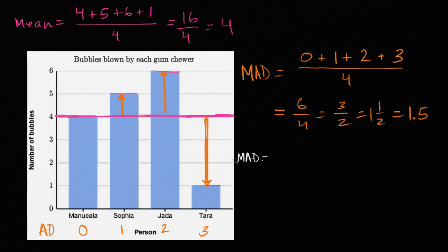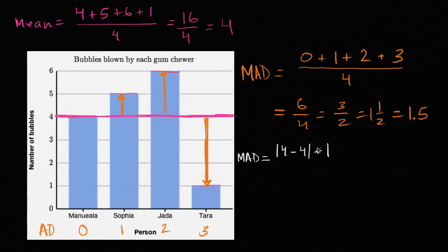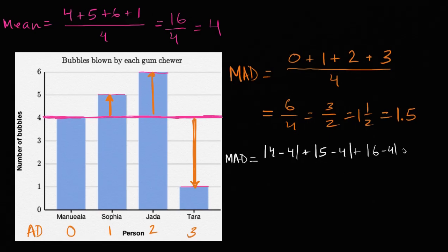The mean absolute deviation is equal to: Manuela blew four bubbles, subtract the mean of four, take the absolute value — that's her absolute deviation, which is zero. Then Sophia blew five bubbles and the mean is four. Then Jada blew six bubbles and the mean is four. Then Tara blew one bubble and the mean is four. Then you divide by the number of data points, which is four.